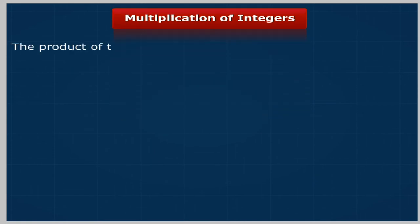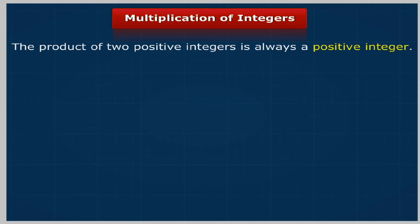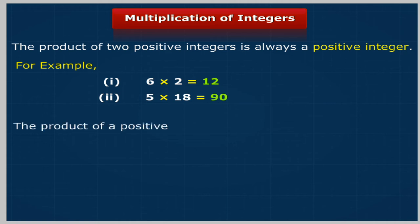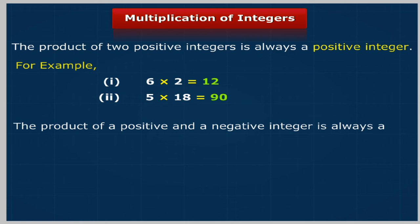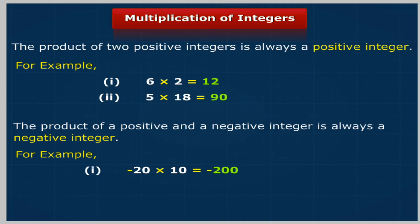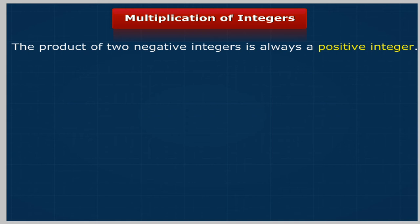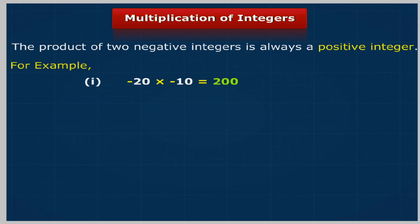Multiplication of integers: The product of two positive integers is always a positive integer. For example, 6 × 2 = 12 and 5 × 18 = 90. The product of a positive and a negative integer is always a negative integer. For example, -20 × 10 = -200 and 11 × -17 = -187. The product of two negative integers is always a positive integer. For example, -20 × -10 = 200 and -90 × -5 = 450.